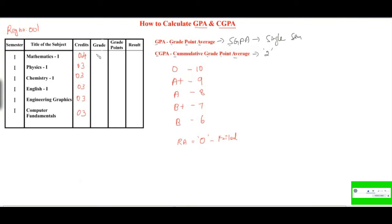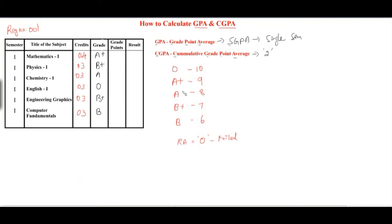After completing their in-semester examination, the student got some grades. For mathematics, she got A+; for physics, B+; in chemistry, A; English, O; engineering graphics, B+; and for computer fundamentals, B. Each grade has its numerical value — grade points — which you can get from the table.